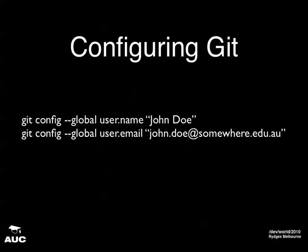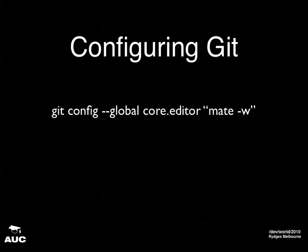Next thing you're going to want to do is configure Git. You need to tell Git who you are, because every time you write something into the repository, it records who you are. Those are global configuration options. If you're a TextMate user, there's another config option I recommend. Global config options are stored in .gitconfig in your home directory.